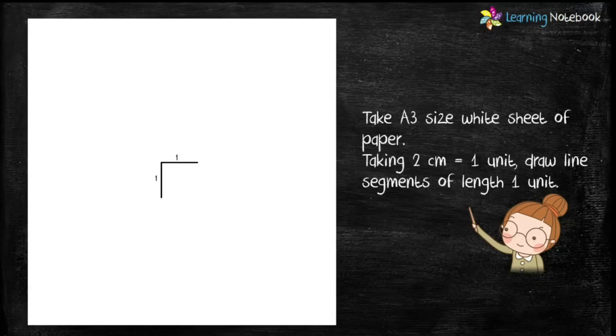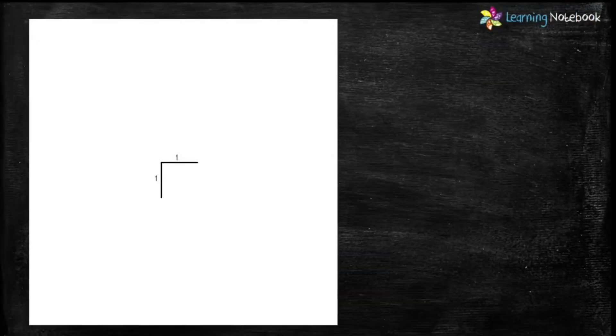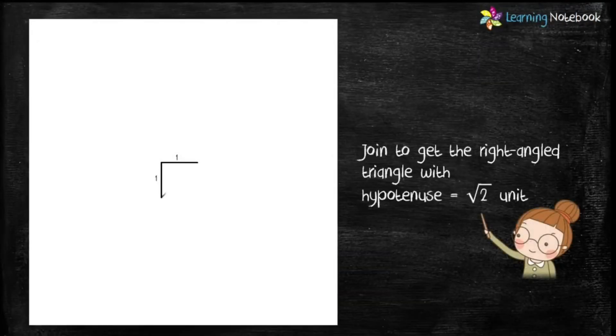Students, you can also use a compass to draw an angle of 90 degrees. Now join these line segments to get a right-angled triangle with hypotenuse equals to root 2 units.